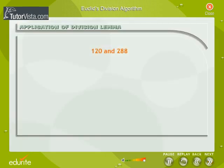Consider the numbers 120 and 288. 288 is greater than 120. We apply the division lemma. The remainder 48 is not equal to 0.